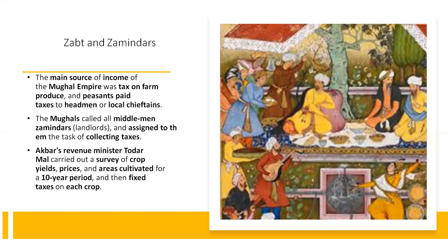The main source of income of the Mughal Empire was tax on farm produce, and peasants paid taxes to headmen or local chieftains. The Mughals called all middlemen Zamindars and assigned them the task of collecting taxes. Akbar's Revenue Minister Todermal carried out a survey of crop yields, prices, and areas cultivated for a 10-year period, and then fixed taxes on each crop.